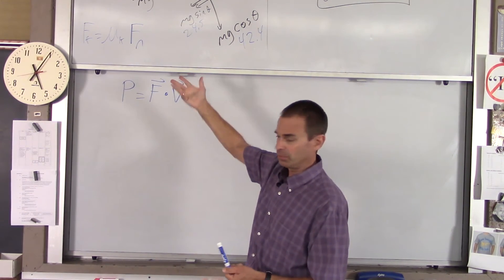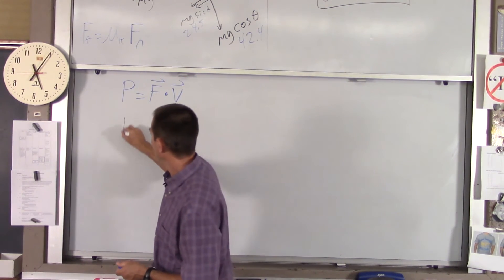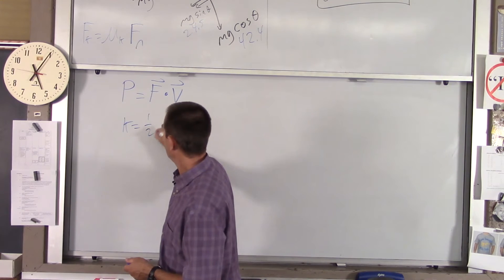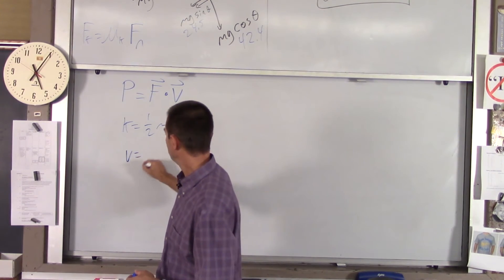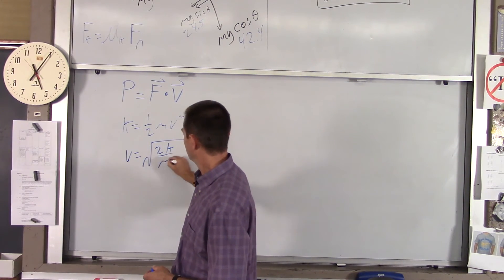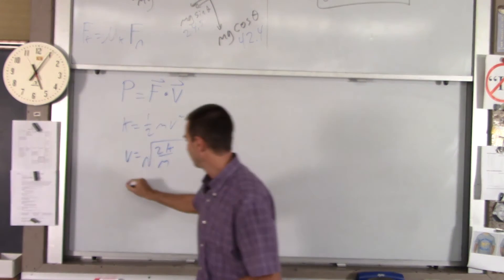Well, we know that kinetic energy is 20 joules, and we know the equation for kinetic energy is one-half mv squared. So, if I solve that for v, I got all those numbers. I can find v right away. It's 2 times 20 over 5, which is root 8. So, your velocity is about 2.83.